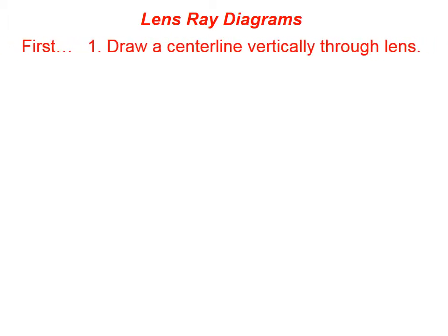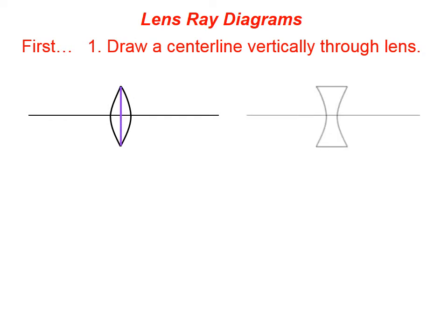When drawing lens ray diagrams, we first draw a center line vertically through the lens. On the left here, we have a converging lens, and I've drawn a center line vertically through it. On the right, we have a diverging lens, and again, we're going to draw a center line vertically through the lens.